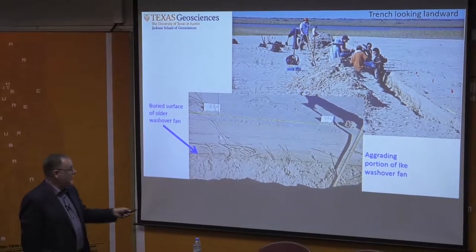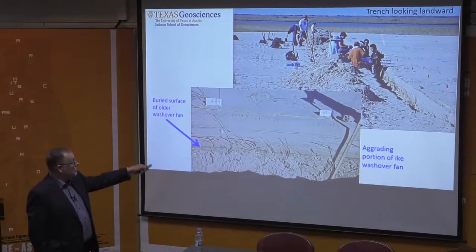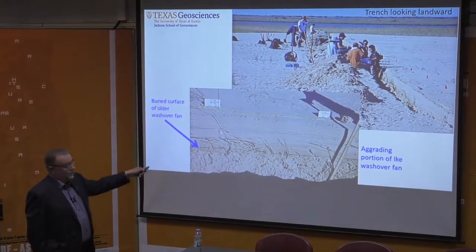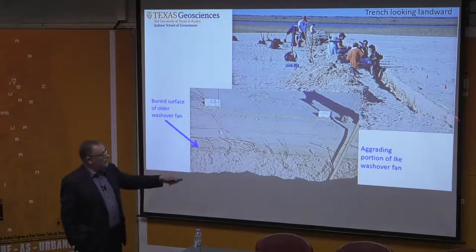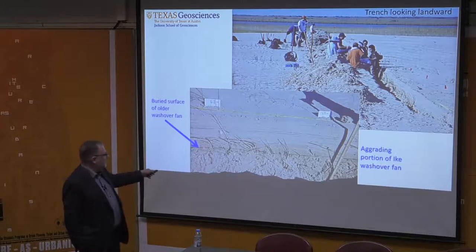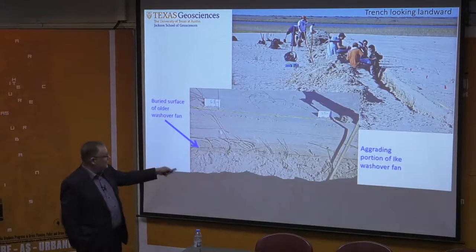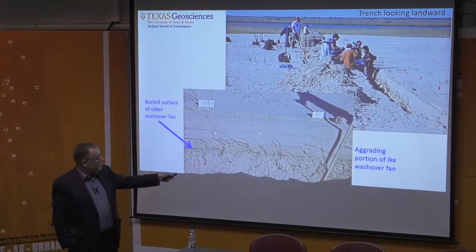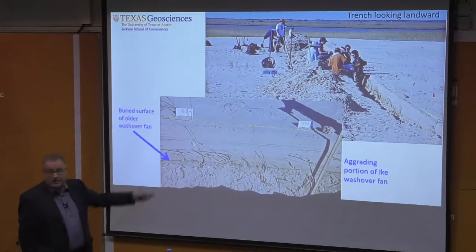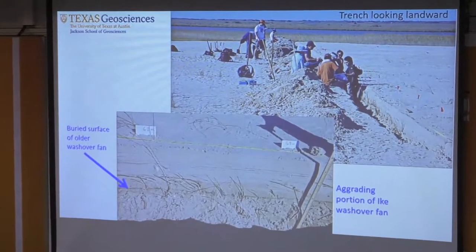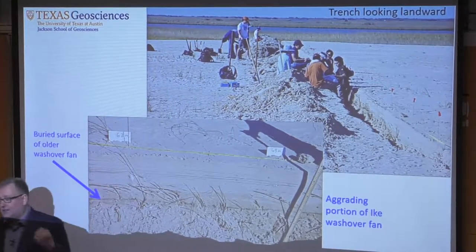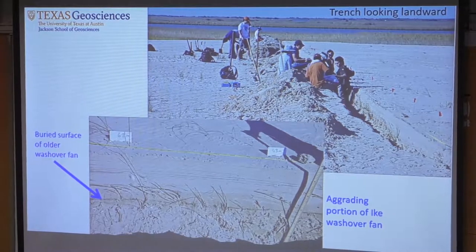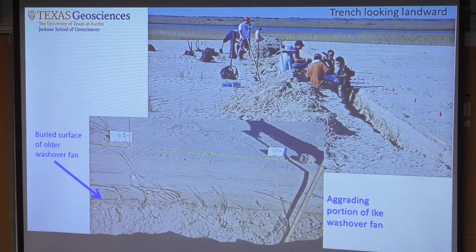Here is an example: our graduate students, shortly after Hurricane Ike, trenched a hundred meters of this deposit. You can see the old buried soil — you can still see the grasses sticking out here. This is the sediment moved during Hurricane Ike, and this is the accretion that happened on the beach. The vegetation that lives on this surface is very sensitive to the elevation of that surface. So if we want to predict resiliency, we need to be able to say what elevation these deposits actually aggrade to.